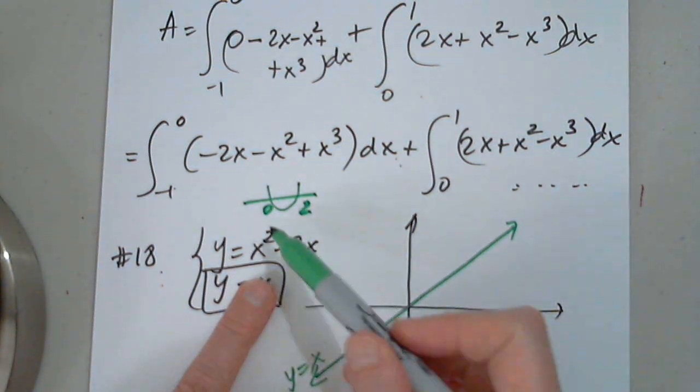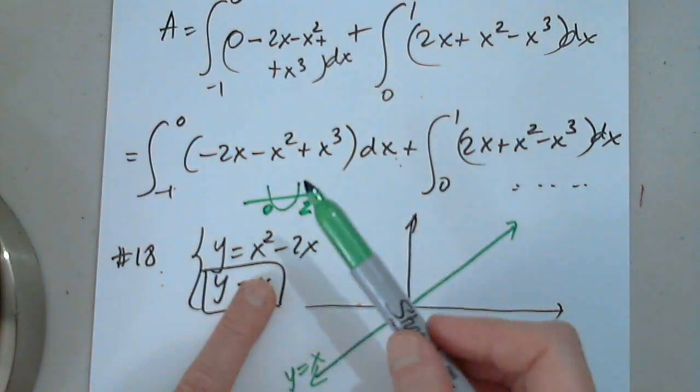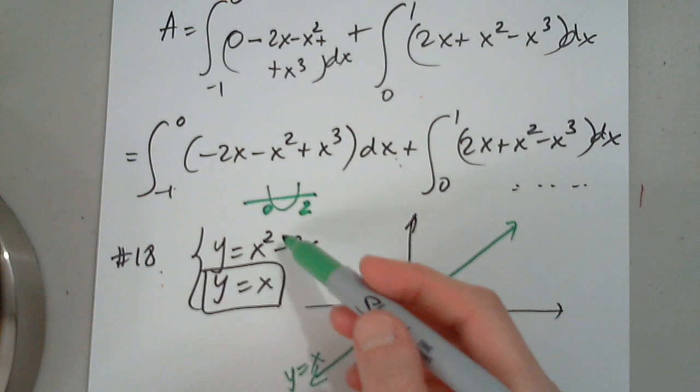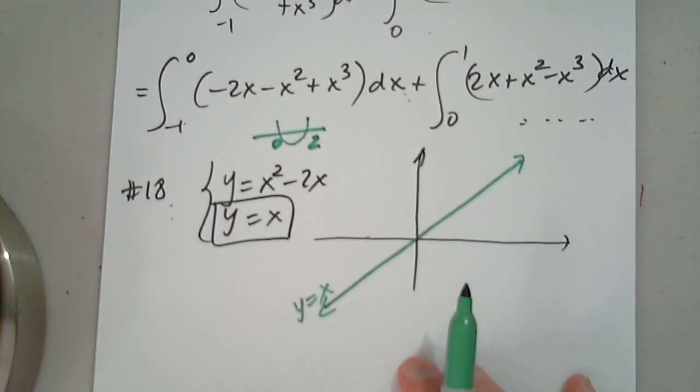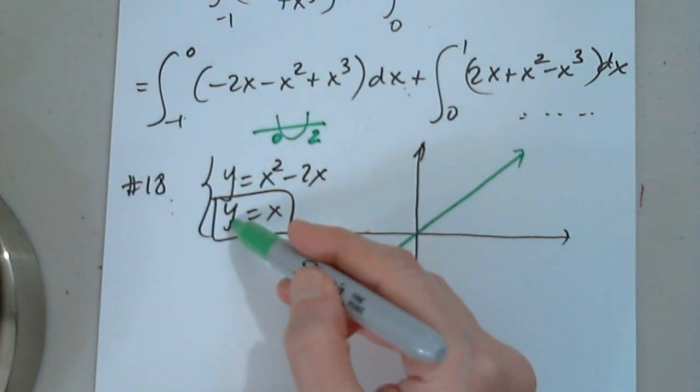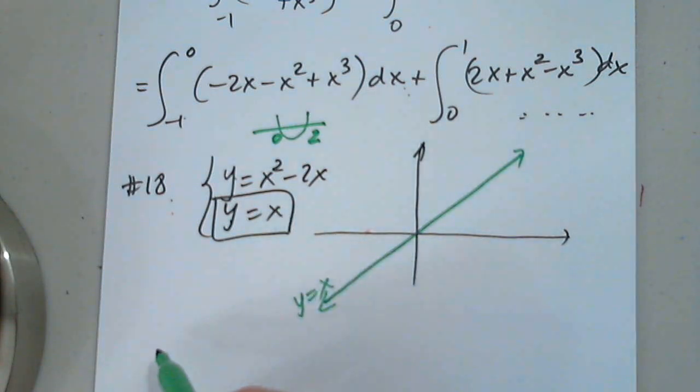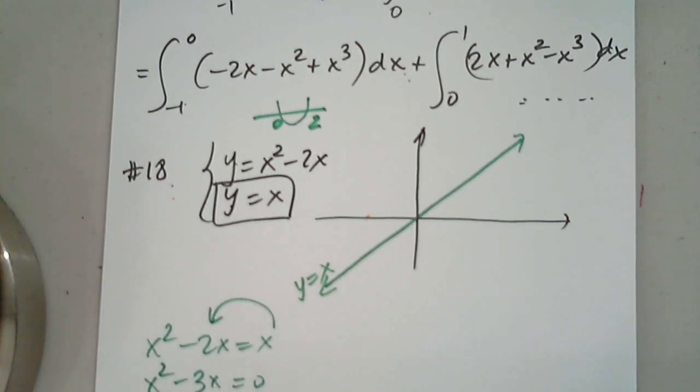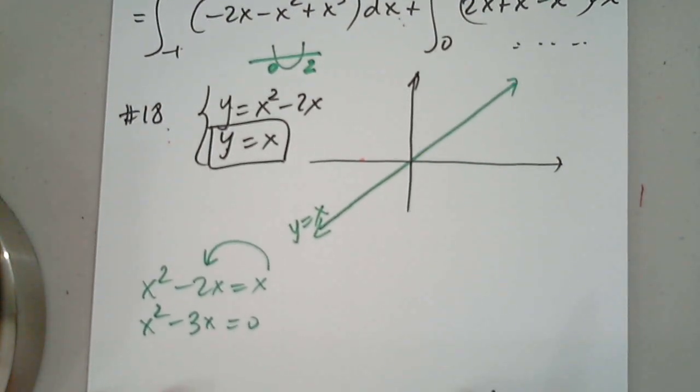It's a quadratic function having a minimum, and it will cross at 0 and 2 when we factor out x. But I like to find the points of intersection first. So when I set y equal to y, this equals to this, so x squared minus 2x equals x, or x squared minus 3x equals 0. And from here we know we have two options, x equals 0 and x equals 3.